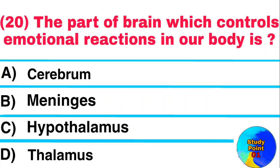Question: Which part of the brain controls emotional reactions in our bodies? Answer: Hypothalamus.